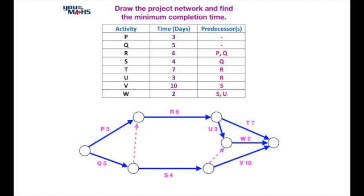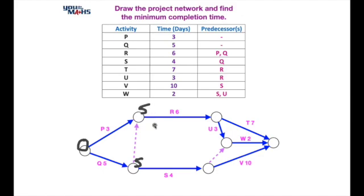Now let's look at a neater version of the project network to work out the critical path and best completion time. Starting from zero days on the left, moving left to right: Q feeds into the bottom node, so the best time there is five days. The top node has two arrows in — P at three days and the dummy activity from Q at five days. The dummy adds no time, so best time is the larger: five days.